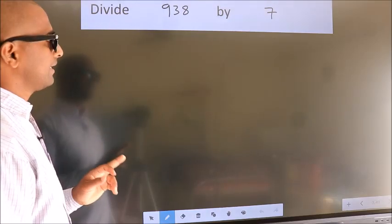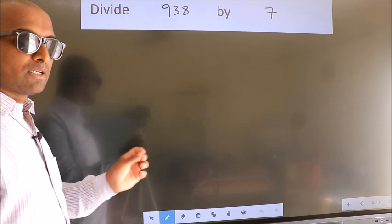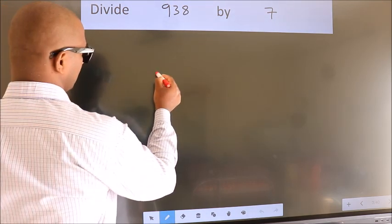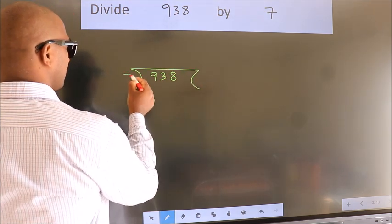Divide 938 by 7. To do this division, we should frame it in this way. 938 here, 7 here.